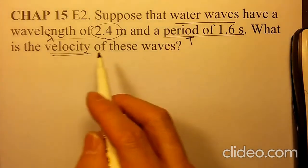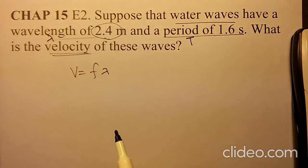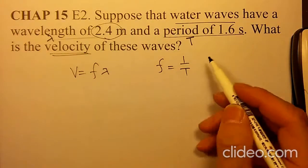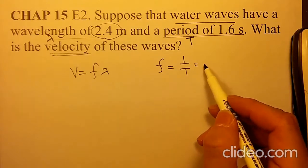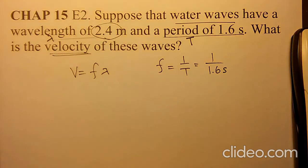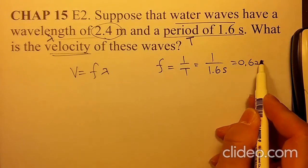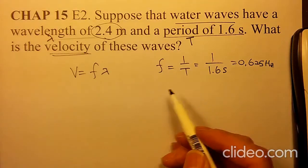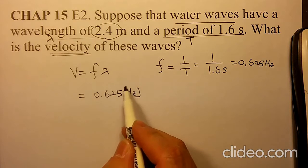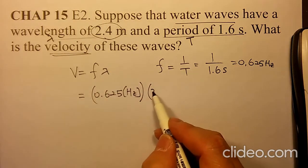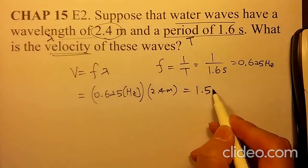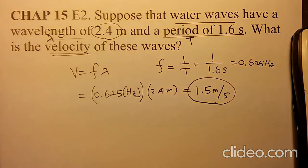First, you need to figure it out. V equals F times lambda, but your F is 1 over the period. Frequency is the inverse of your period. So your frequency should be 1 over 1.6 seconds, which is 0.625 hertz. Then F is 0.625 hertz times lambda as 2.4 meters, giving you 1.5 meters per second as your velocity of that water wave.